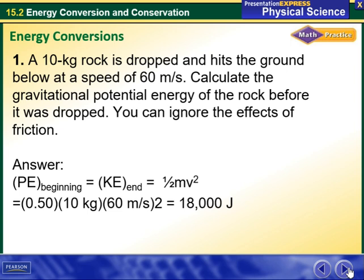The same thing we are going to do. The potential energy at the beginning equals the kinetic energy at the end, which equals half MV squared. Half times 10 kilograms, which is the M, and V equals 60 meters per second, all squared. Once you put that in your calculator, you get 18,000 joules.